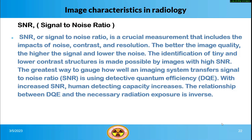SNR, or signal-to-noise ratio, is a crucial measurement that includes the impacts of noise, contrast, and resolution. The better the image quality, the higher the signal and lower the noise. The identification of tiny and lower contrast structures is made possible by images with high SNR. The greatest way to gauge how well an imaging system transfers SNR is using Detective Quantum Efficiency (DQE). With increased SNR, human detecting capacity increases. The relationship between DQE and the necessary radiation exposure is inverse.